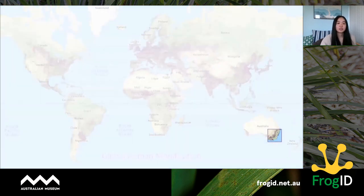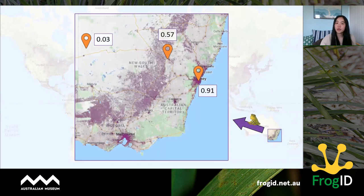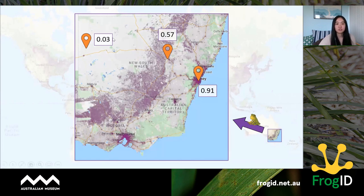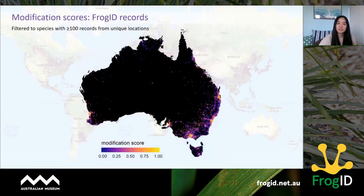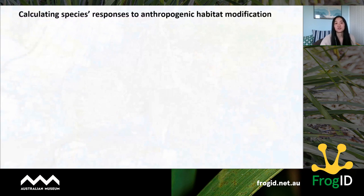Taking a look at how this index looks in New South Wales, the modification index ranges from zero — not very modified — to one — very modified. There's a nice continuum of values across New South Wales, from pretty much zero in the outback to one in the city. We can then take each FrogID observation and give it a modification score. We did this for every species with more than 100 records from unique locations, ending up with over 126,000 records to quantify each species' response to habitat modification.